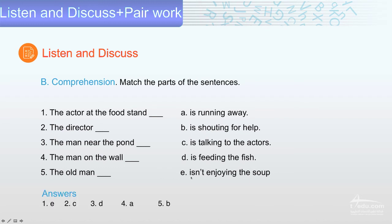Let's see the answer. Number one, the actor at the food stand. Number two, the director. C is talking to the actors. Number three, the man near the pond is feeding the fish. Number four, the man on the wall is running away. Number five, the old man is shouting for help. Shouting for help.